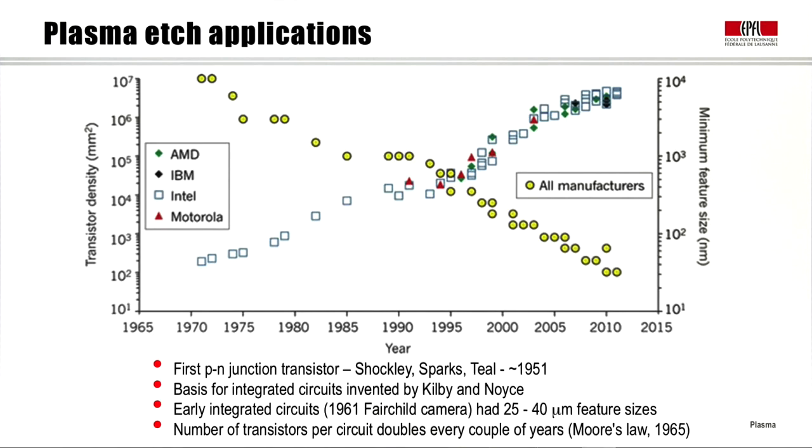On this graph, we see how microelectronics has improved during the years. This is the date. This is the number of transistors on a square millimeter of silicon. This is the maximum feature size on the integrated circuit in nanometers. During the years, the number of transistors on a square millimeter has increased strongly, now coming up to 10 million transistors per square millimeter. And the photoresist size has come down to a few tens of nanometers as the control of plasma etching has improved.